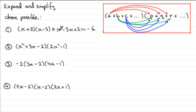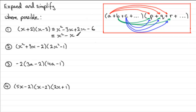We've got 4 terms and we can group up the X terms. So this is identical to X squared, then minus 3X plus 2X which is minus X, and then the constant on the end minus 6.